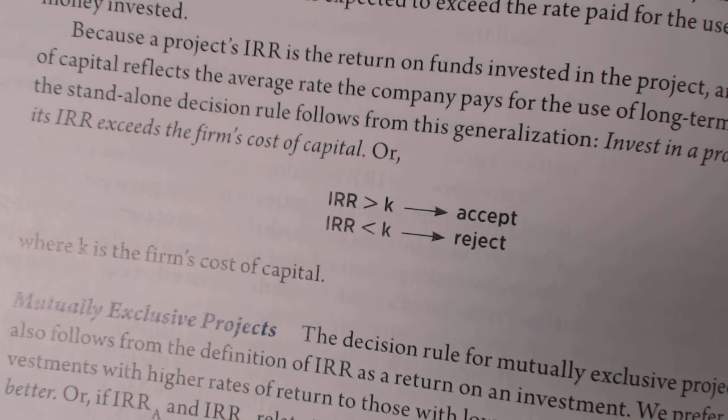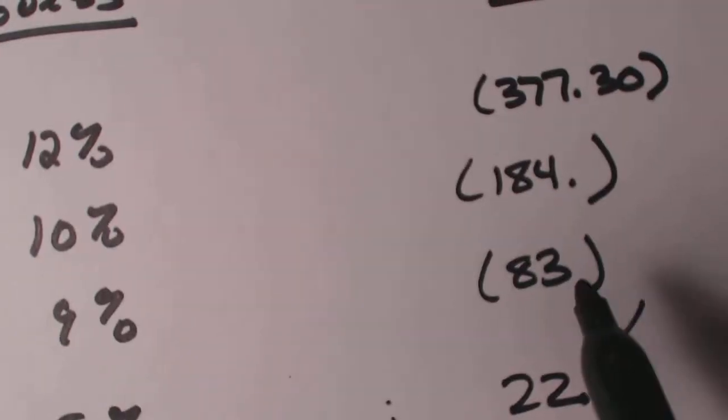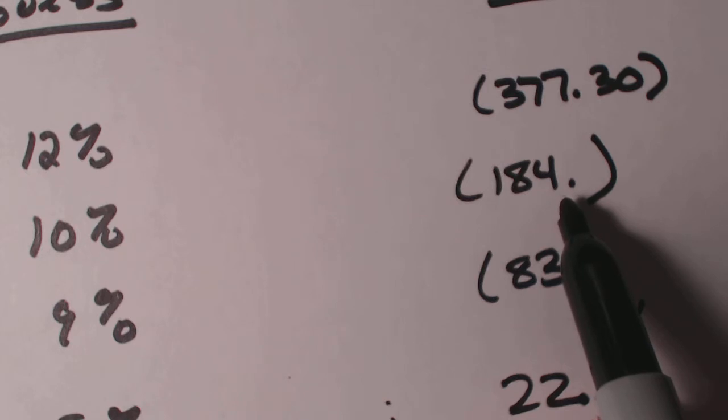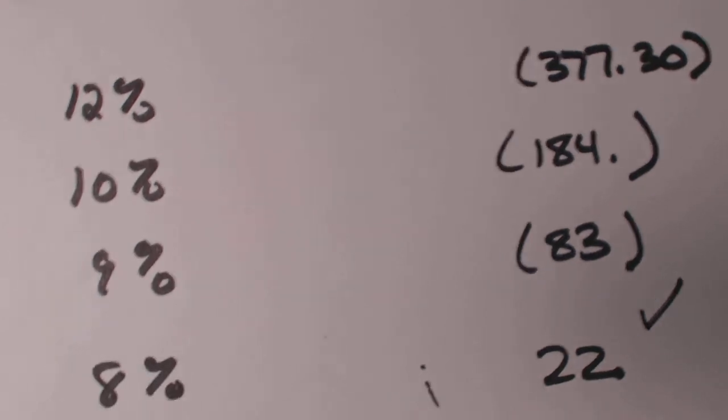Now at 10%, since it's below zero, negative 84, as the problem is asking, the cost of capital is 10%, we would reject this. So let me just recap. What you need to do is you need to come in right in the same area and start guessing and plugging in numbers. It's a little time consuming, but this is the way it works.